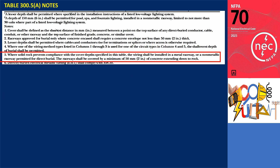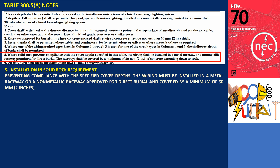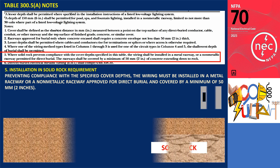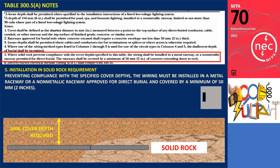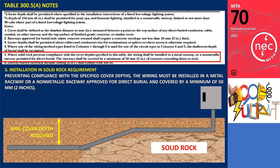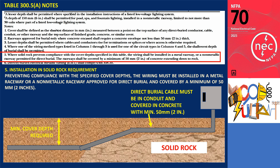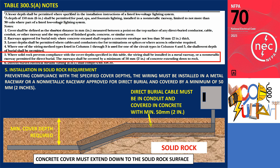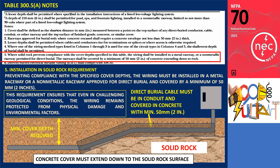Note 5: If solid rock prevents adherence to the cover depths specified in this table, the wiring must be installed in either a metal raceway or a non-metallic raceway approved for direct burial. These raceways should be encased in at least 50 millimeters (2 inches) of concrete that extends down to the rock. When installing a direct burial cable, solid rock may obstruct compliance with the minimum cover depth in Table 300.5(a). Per Note 5, the cable can be buried at a shallower depth but must be placed within conduits and covered by a minimum of 50 millimeters (2 inches) of concrete reaching down to the rock, ensuring protection from physical damage and environmental factors.